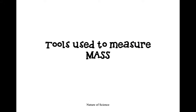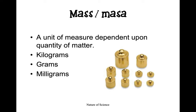Next, we'll discuss different tools used to measure mass. A unit of mass is a measure dependent upon the quantity of matter — the more matter there is, the larger the mass. I want you to point on the screen which of these objects would probably have the smallest amount of mass. The smallest object would probably be weighed in milligrams. A milligram is the smallest unit of mass.